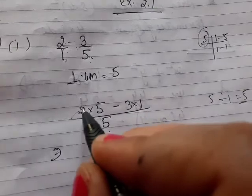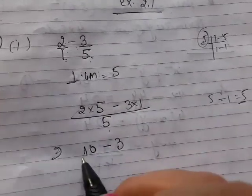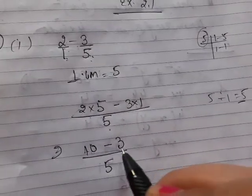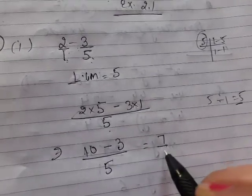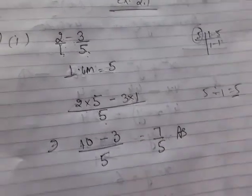So the answer is 10 minus 3, that is 7 over 5. Seven by five, that is your answer.